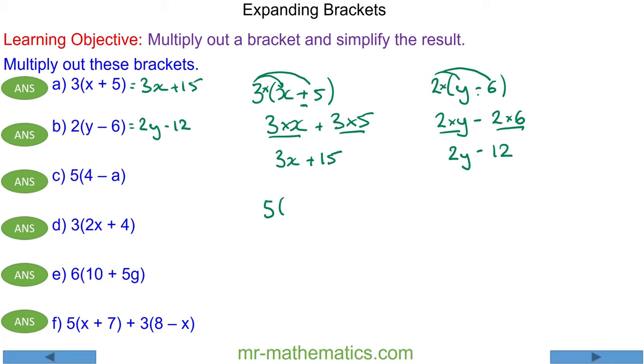For question C we have 5 multiplied by the brackets 4 minus a. So 5 times 4 is 20, take away the 5 times a which is 5a. So we have 20 minus 5a. Remember in algebra we don't write the times symbol, so 5 times a we write as 5a.